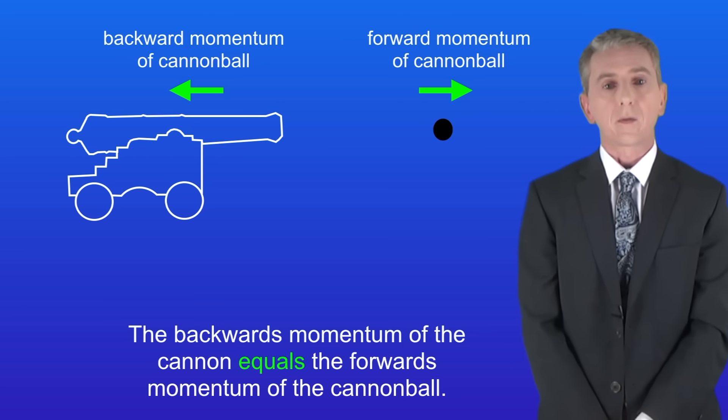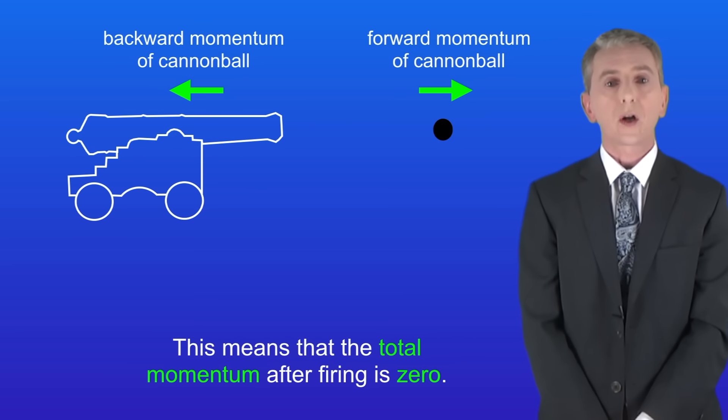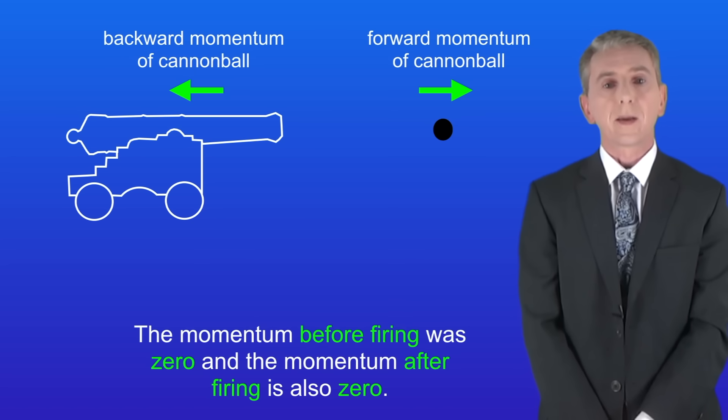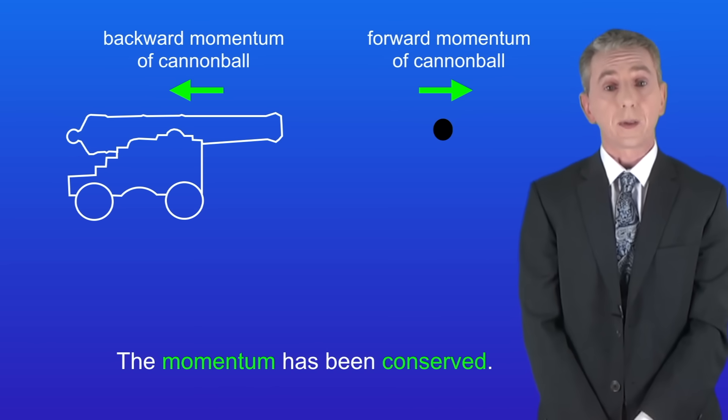The backwards momentum of the cannon equals the forwards momentum of the cannonball. So this means that the total momentum after firing is zero. So as you can see the momentum before firing was zero and the momentum after firing is also zero. In other words the momentum has been conserved.